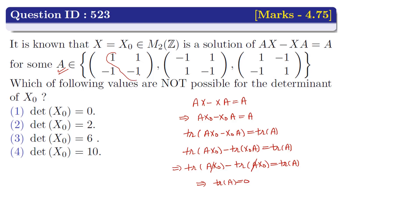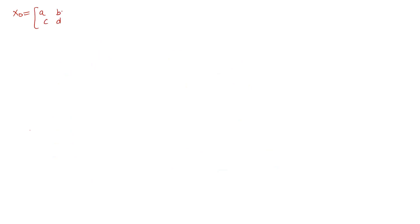In the first matrix the trace is 0, but in the second and third matrices the trace is not 0. So we take the first matrix as our A matrix. Now let x0 = [[a,b],[c,d]] where a, b, c, d belong to the integers, and A is the matrix [[1,1],[-1,-1]] which has trace 0.